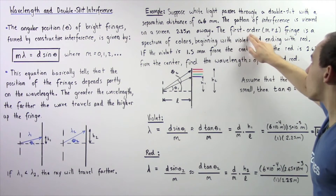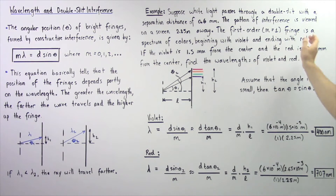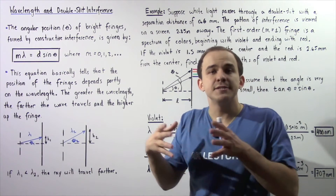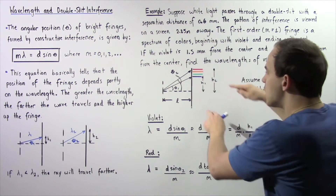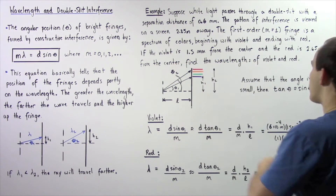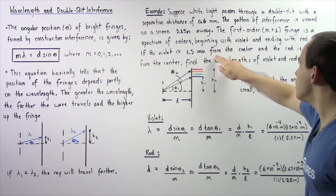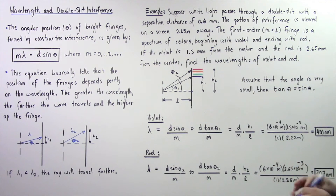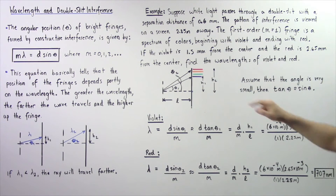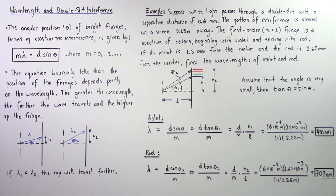Suppose that the first order — M equals 1 — fringe is a spectrum of colors beginning with violet and ending with red. Because white light is essentially a spectrum of different wavelengths, this fringe will consist of a spectrum of colors. The first color will be violet and the last will be red. If violet is found 1.5 millimeters from the center of the screen, so h1 is 1.5 millimeters, and red is 2.65 millimeters from the center, so h2 is 2.65 millimeters, we want to find the wavelengths of violet and red.